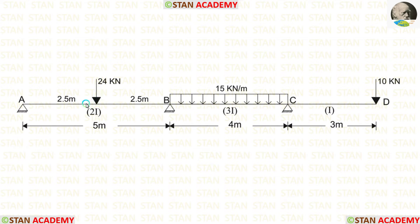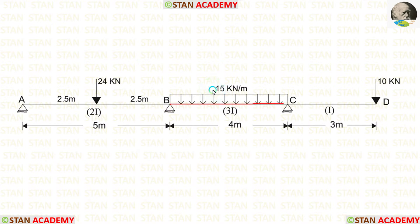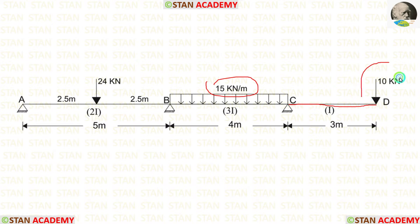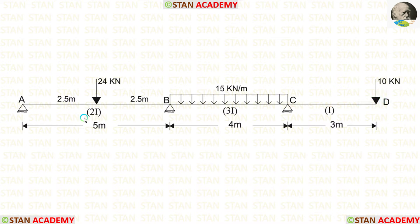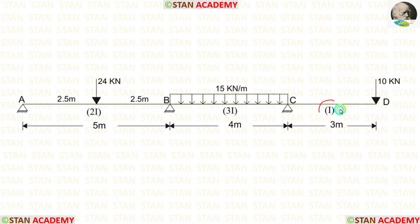In span AB, there is a point load of 24 kilonewtons acting at the center. In span BC, there is a uniformly distributed load of 15 kilonewtons per meter acting for the full span. In the overhanging span CD, there is a point load of 10 kilonewtons acting at point D. The moment of inertia for span AB is 2i, for span BC it is 3i, and for the overhanging span it is i.